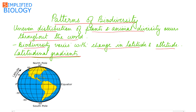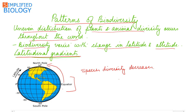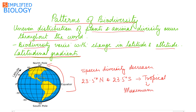We'll start with latitudinal gradients. Species diversity decreases as we move from the equator towards the poles. The tropical region, between 23.5 degrees north and 23.5 degrees south, has the maximum species diversity, and this diversity decreases as we move from the tropics to the temperate region and then to the polar region.